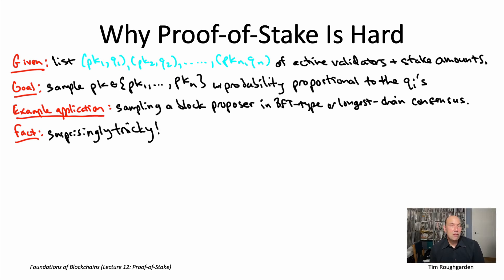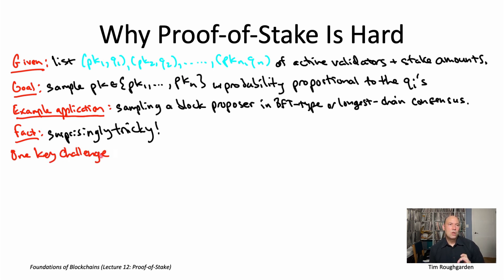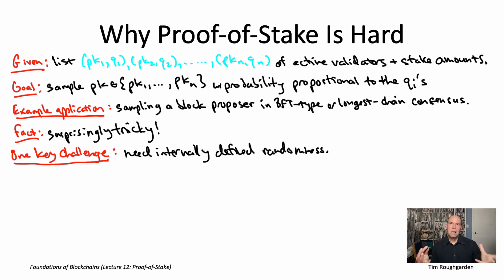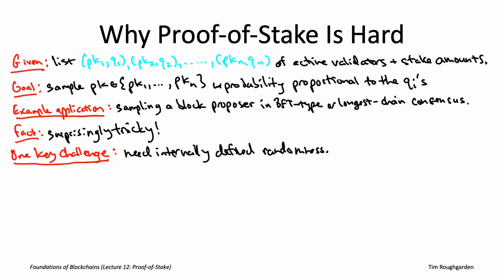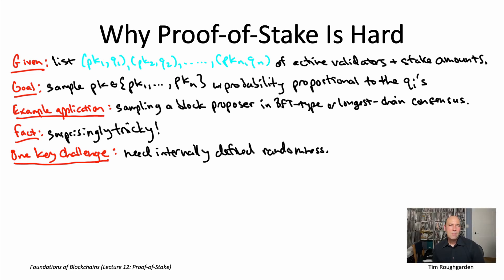You might find it surprising — why is it so hard? The answer I want to focus on now and for the next many videos is the challenge of generating randomness from the hermetically sealed blockchain environment. Imagine a blockchain protocol wanted some randomness, like the outcomes of some fair coin flips. Let's think through where that randomness might come from, separately for the proof-of-work and proof-of-stake cases.